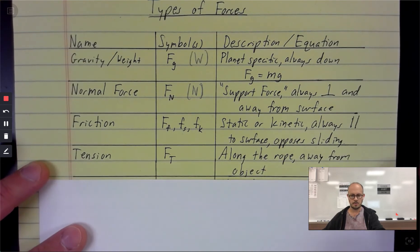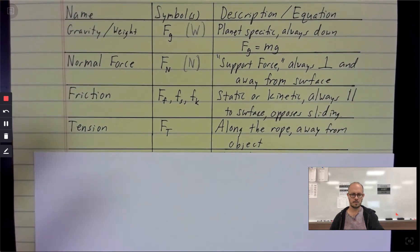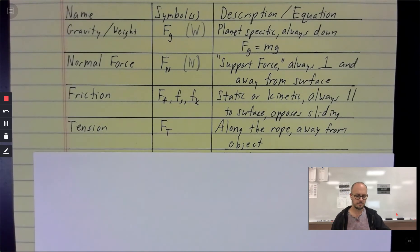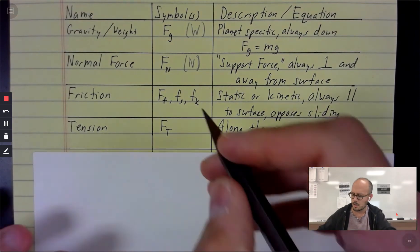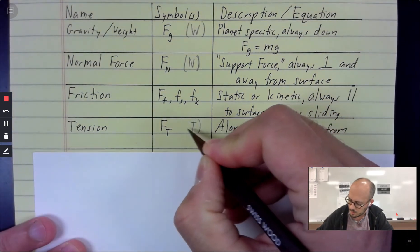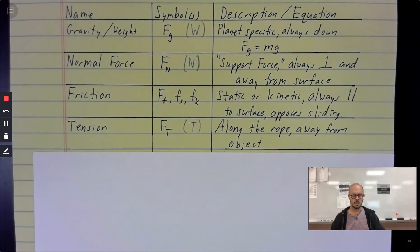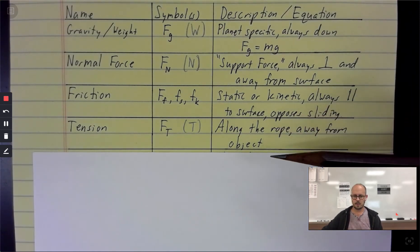Then we have a couple of forces that deal with long, skinny objects. So tension and springs. Tension is capital F, lowercase T. Sometimes you would see that denoted as just a T. We don't talk about temperature in this course, so that's fairly unambiguous, although we do talk about the period of oscillation. So that might pop up some other time. Tension is a force that is carried along a rope.